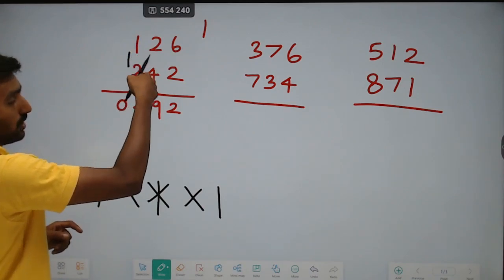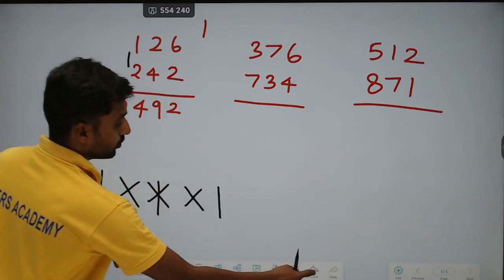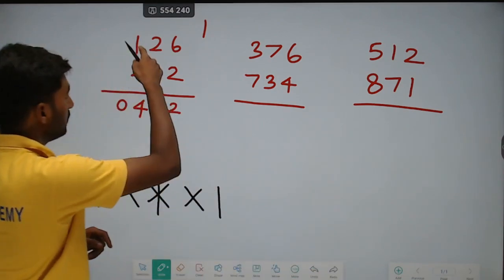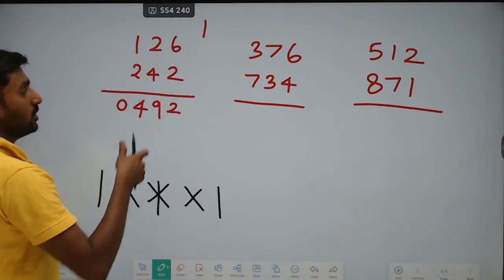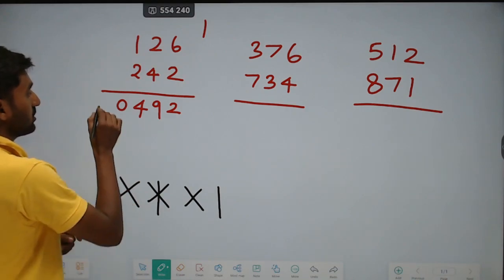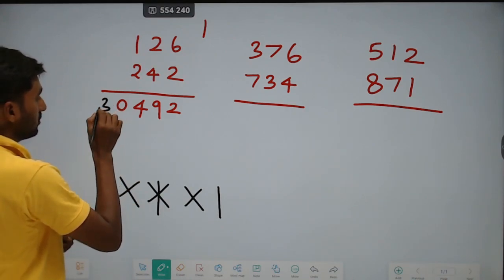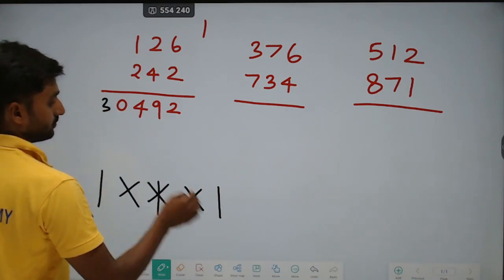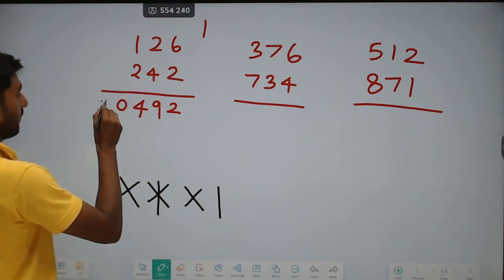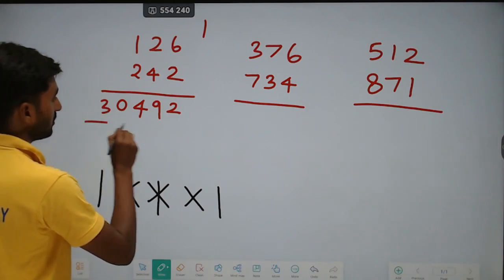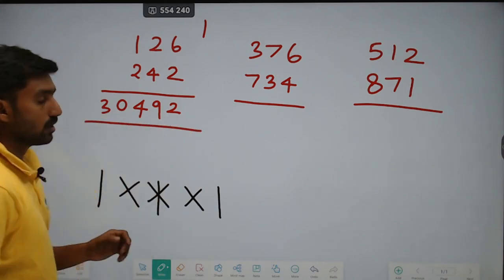1 into 2 is 2. Already carry 2 plus 1 is equal to 3. So the result digits are: 3, 0, 4, 9, 2.